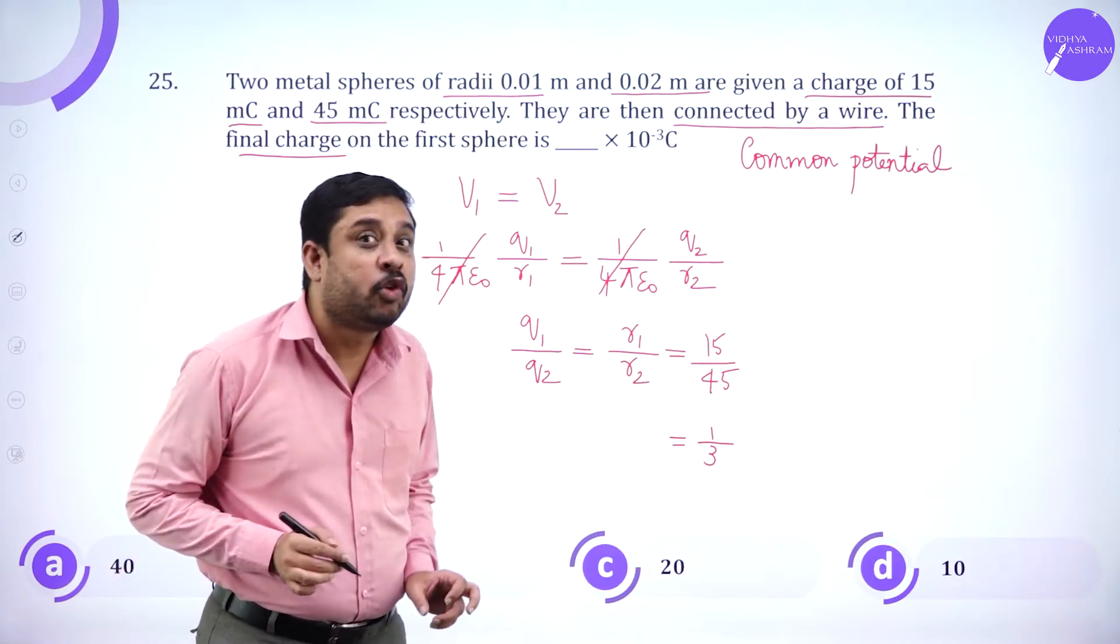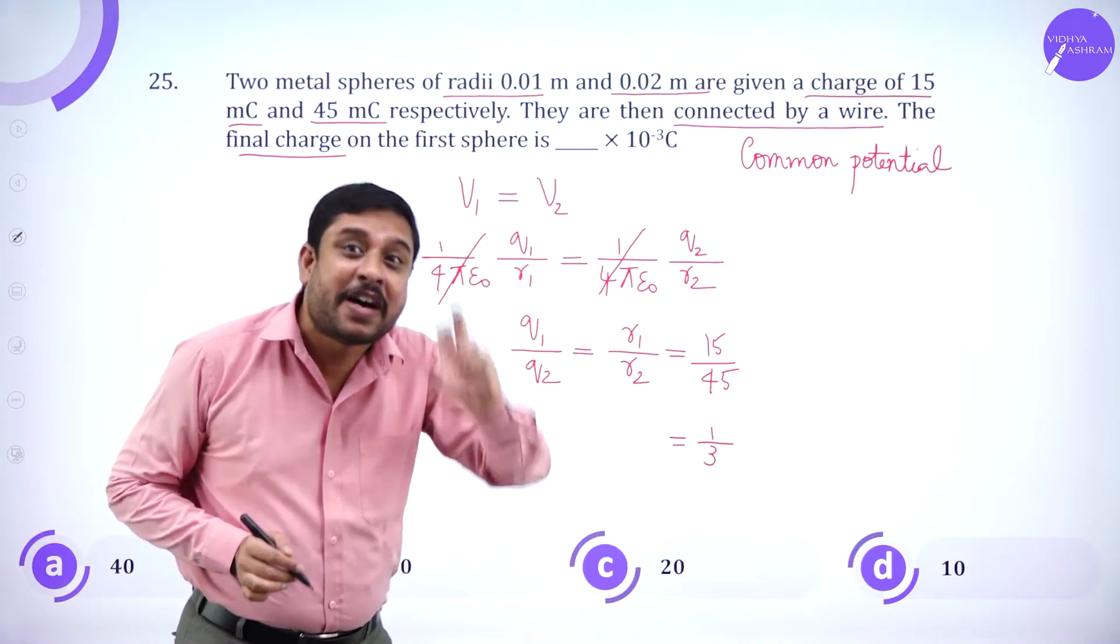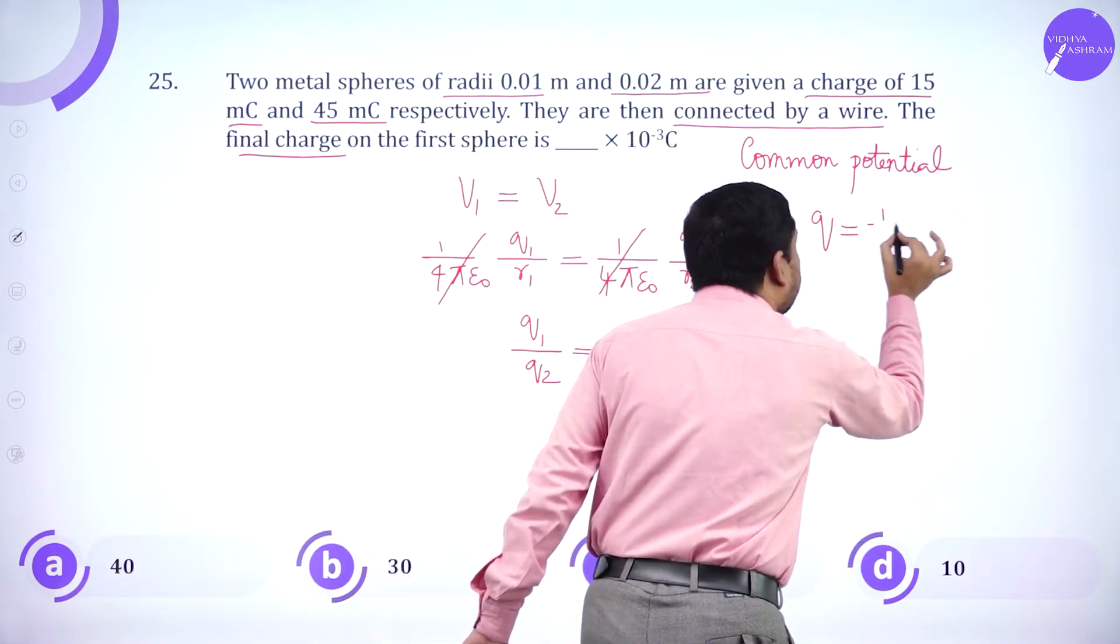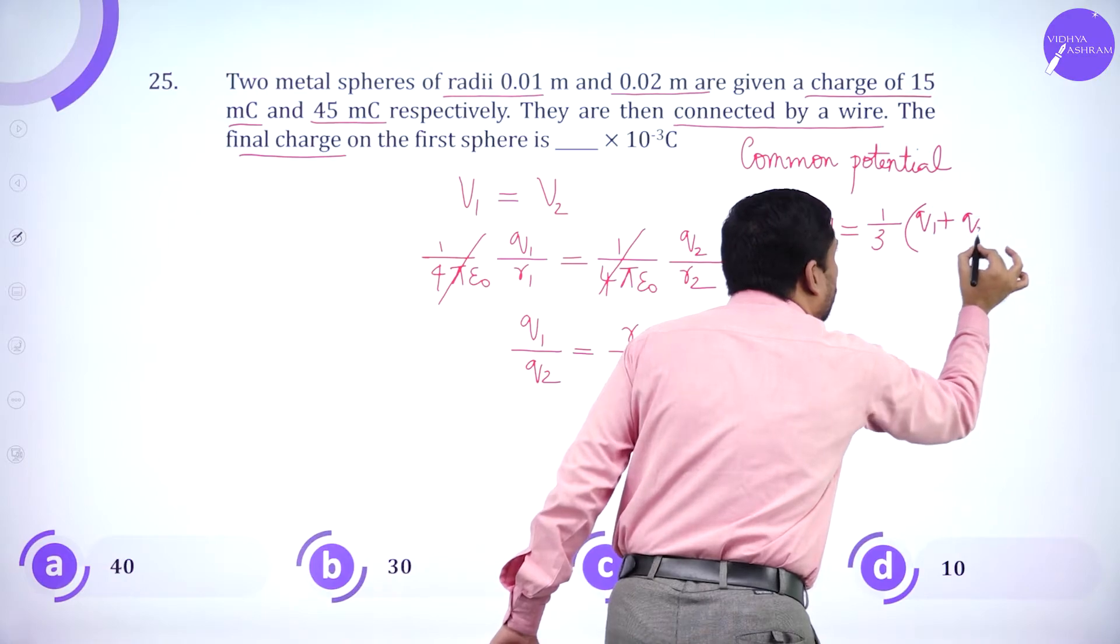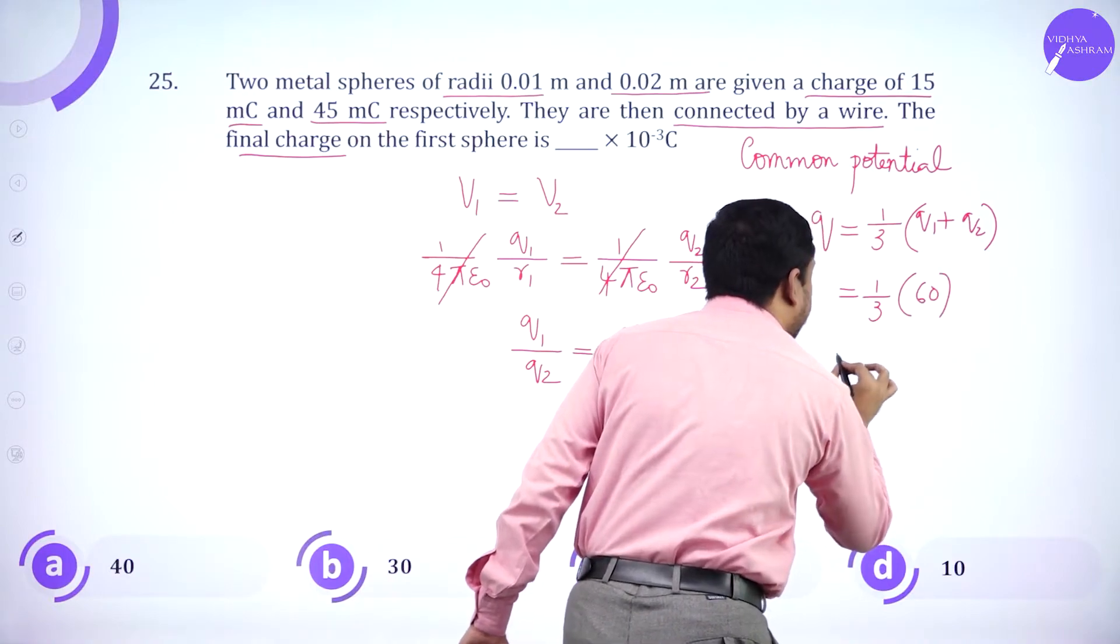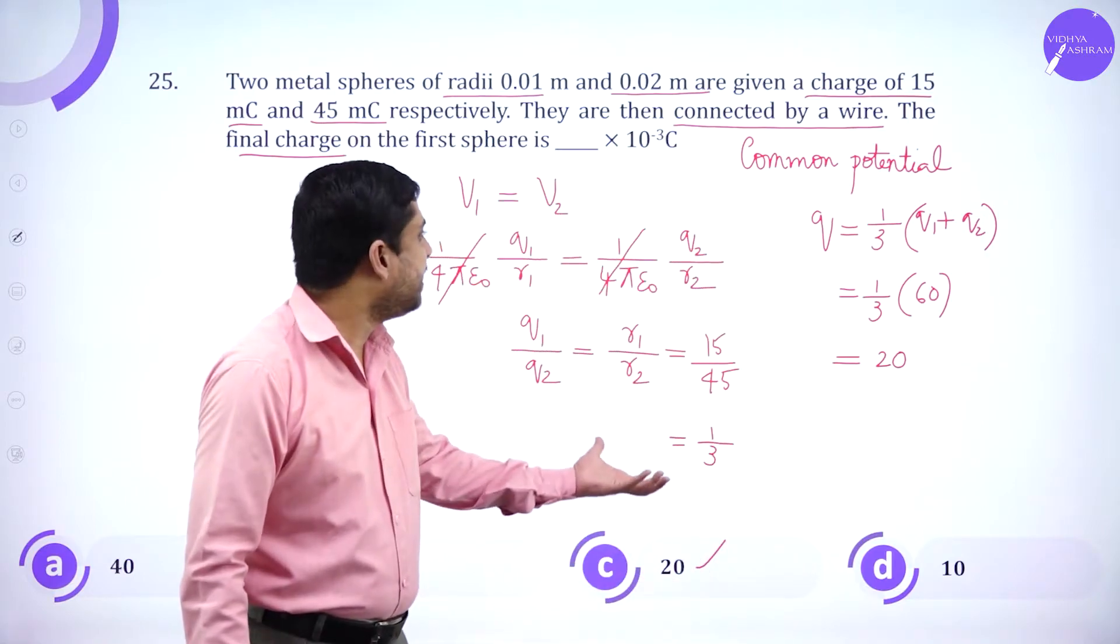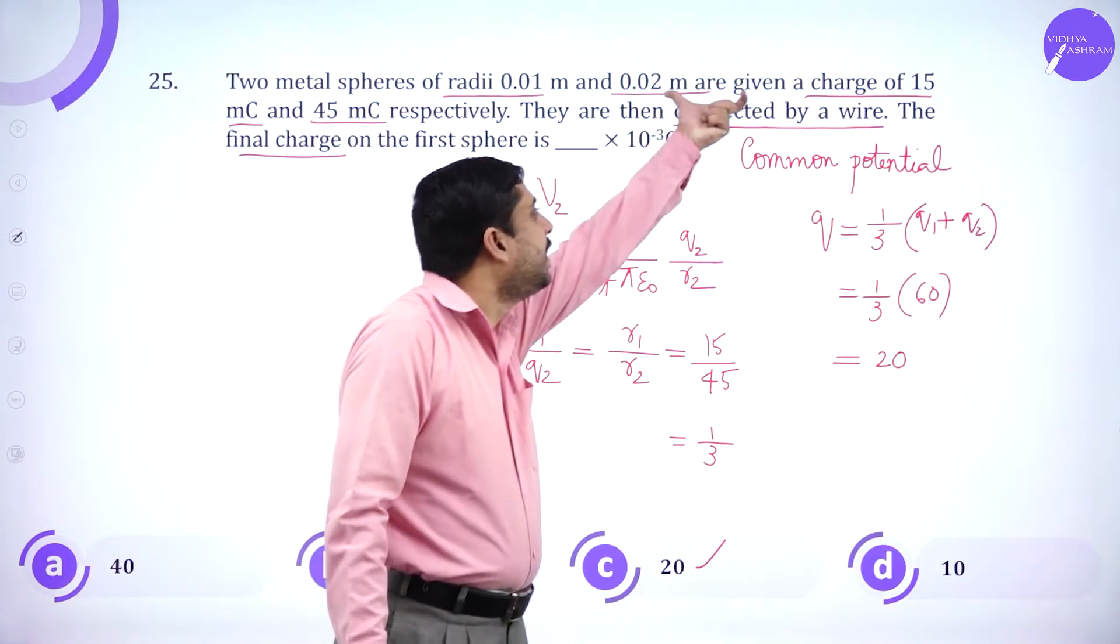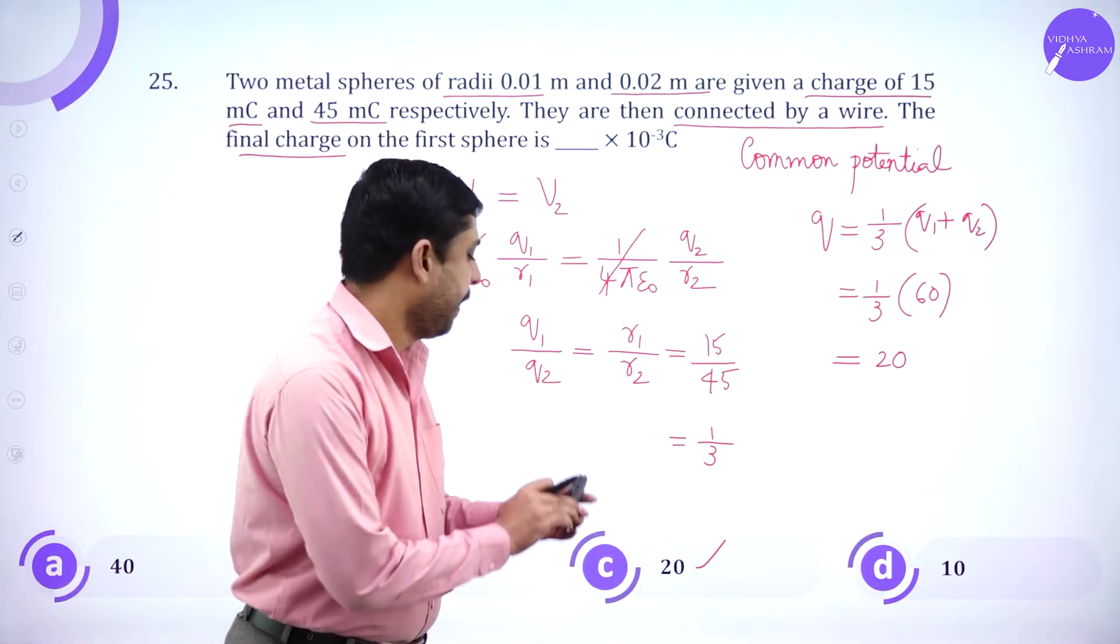Charge on the first sphere is 15, charge on the second sphere is 45, 1 by 3. So the ratio of Q1 by Q2 is 1 by 3. The final charge on the first sphere, I say Q is 1 by 3 times Q1 plus Q2 or 1 by 3 times 60. So 20 has to be the answer. Very simple. If you know this hint, arriving at the result is so easy.